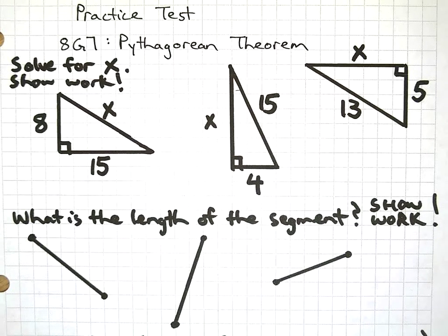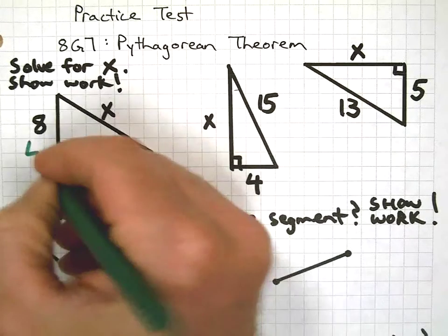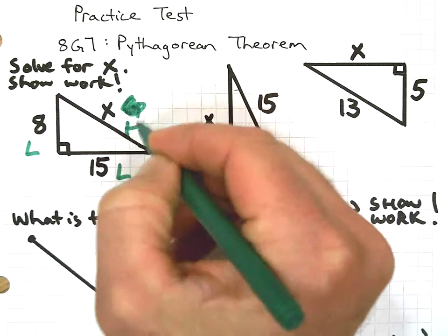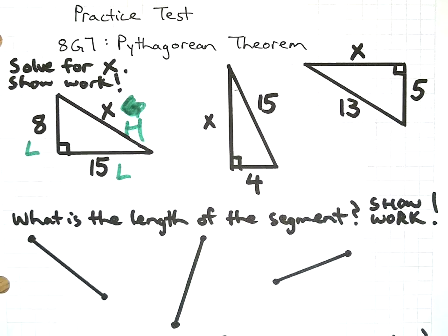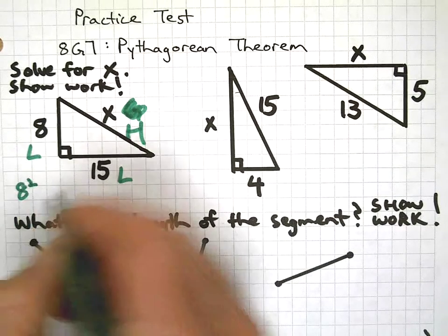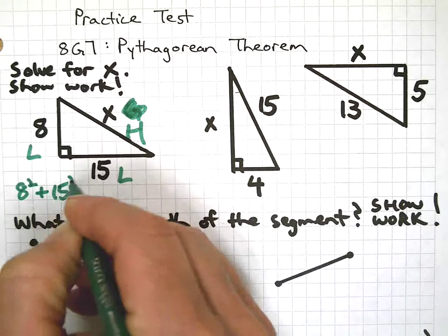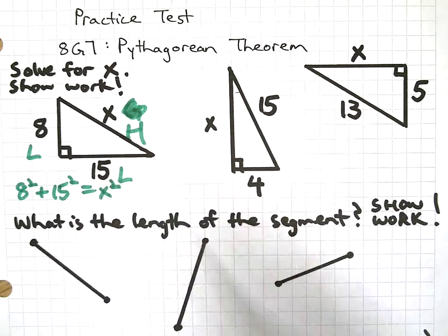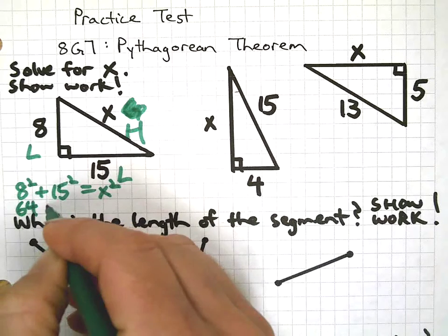So without further ado, here we go. The key to applying the theorem is knowing where the legs are and where the hypotenuse is. I don't know why I put a letter G there, that was weird. And then we're just going to square the legs, set them equal to the hypotenuse, and complete the squares.